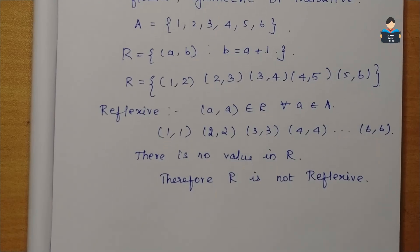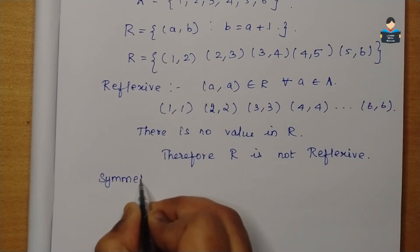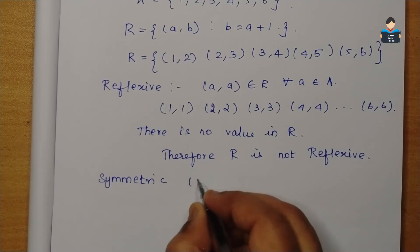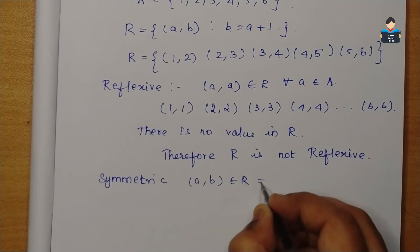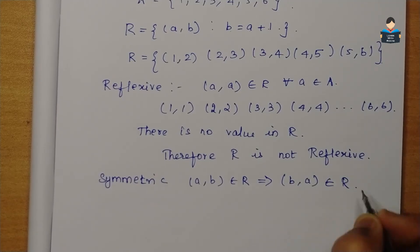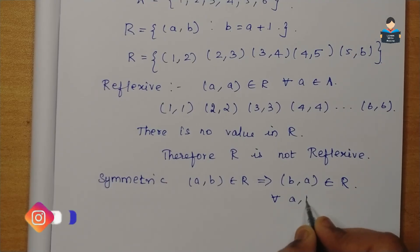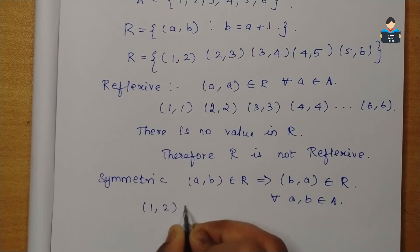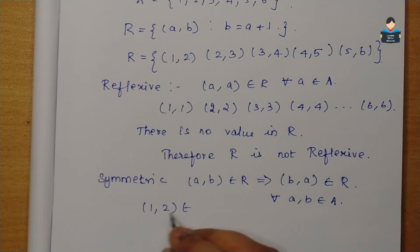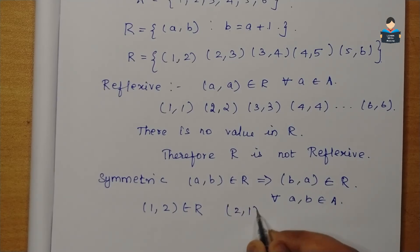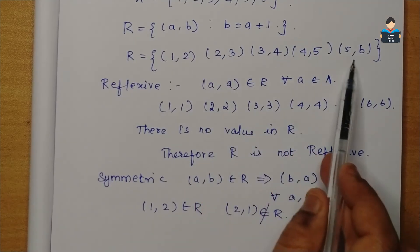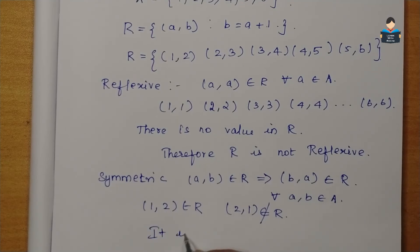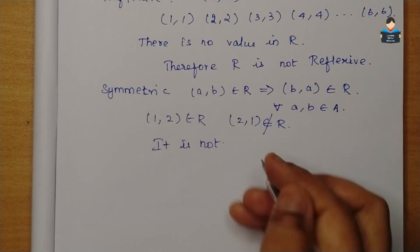Next, check symmetric. The condition is: if (a,b) ∈ R, then (b,a) ∈ R. We can see (1,2) ∈ R, but for symmetry (2,1) should also be in R. However, (2,1) is not in R since 1 ≠ 2+1. Therefore, R is not symmetric.